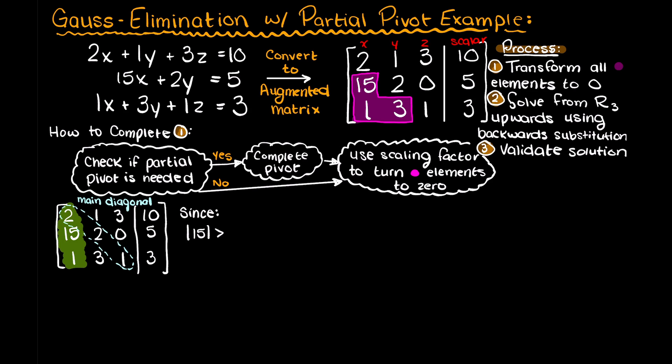As you can see, the absolute value of 15 is larger than 2 or 1. Therefore, partial pivoting tells us to swap these two rows. And we now have the following augmented matrix.